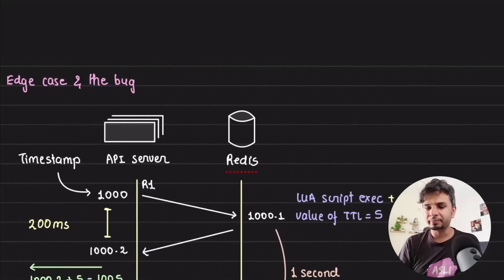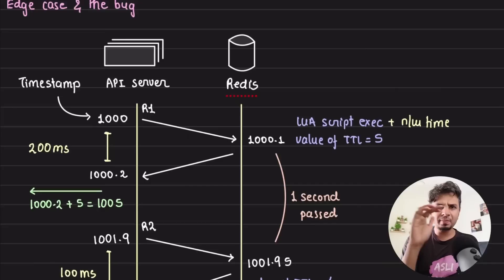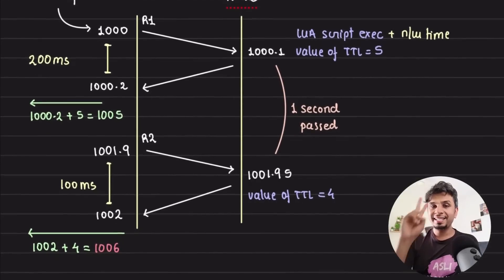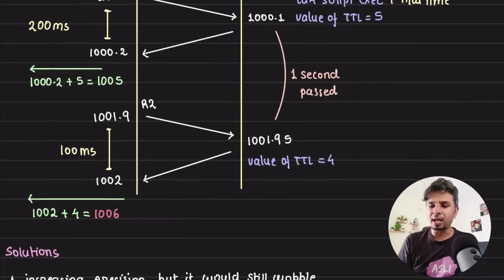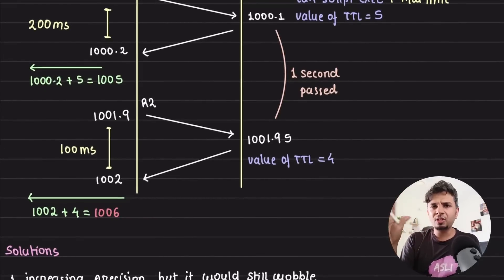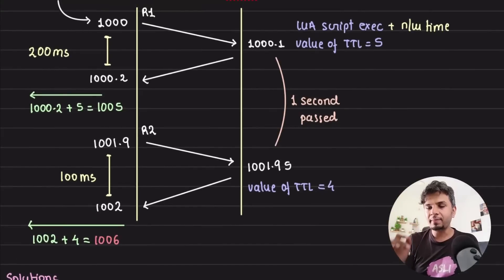Now let's look at the edge case. This is where the wobbling happens. Now the first row remains as is, but assume that the second request got initiated at 1001.9. At 1001.9, the second request got initiated, and let's say it takes a total of 100 milliseconds to reach back, so from API server to Redis back to API server. Now what would happen? It's roughly 50 milliseconds is when we assume that the TTL would be checked, the TTL would be fetched and then responded back.